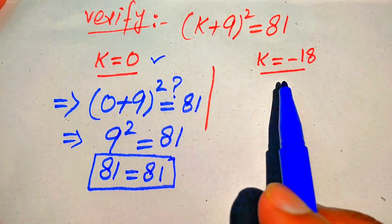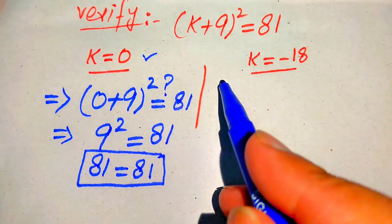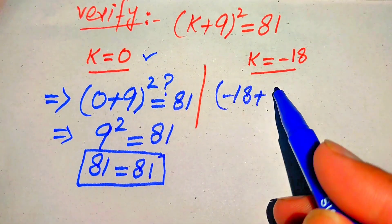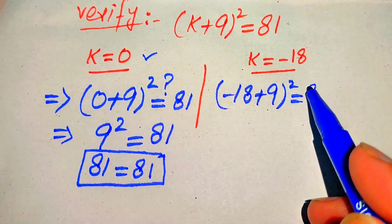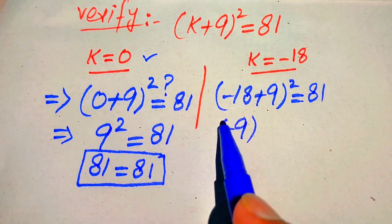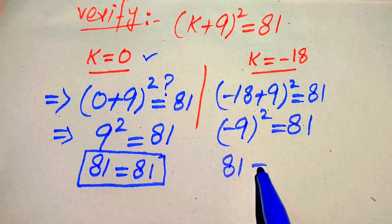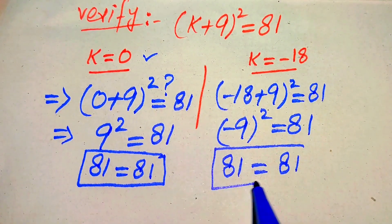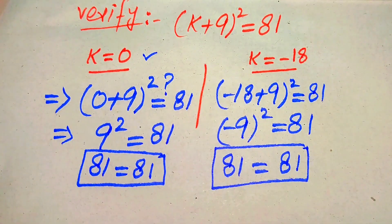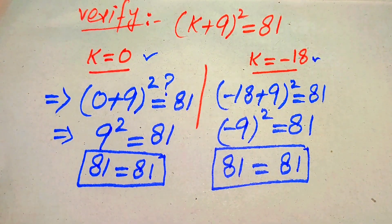For k = −18: substituting gives (−18 + 9)² = (−9)² = 81, which equals 81. This confirms that k = −18 also satisfies the given equation. Finally, the two solutions are k = 0 and k = −18. Thank you so much for watching this video. Please subscribe to my channel for more exciting videos.